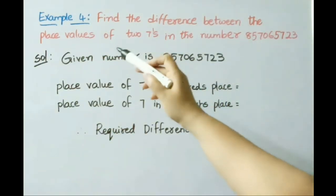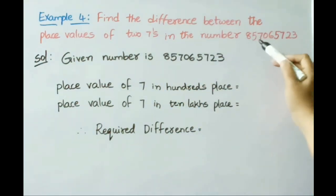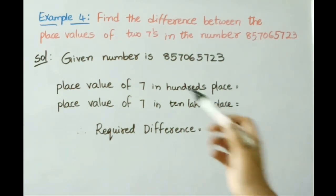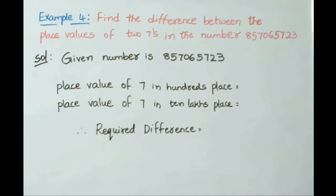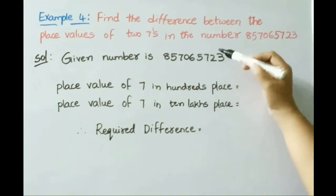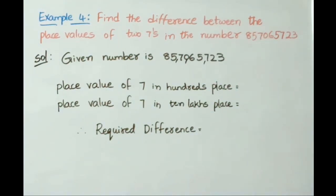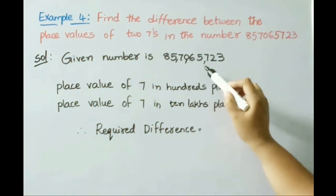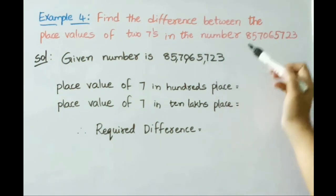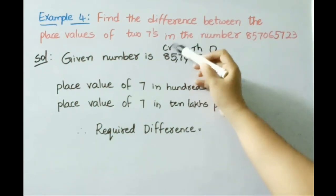See now Example 4: find the difference between the place values of the two 7's in the number 857065723. Solution — the given number is 857065723. Now let us separate this by using commas: first three digits, then after that two and two digits. The number is 85 crores, 70 lakhs, 65,723. Placing periods: ones period, thousands, lakhs, and crores.